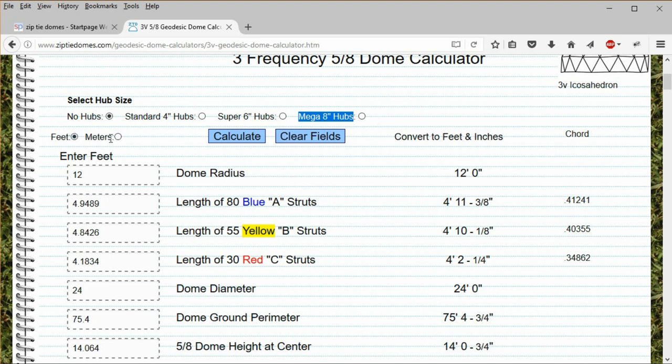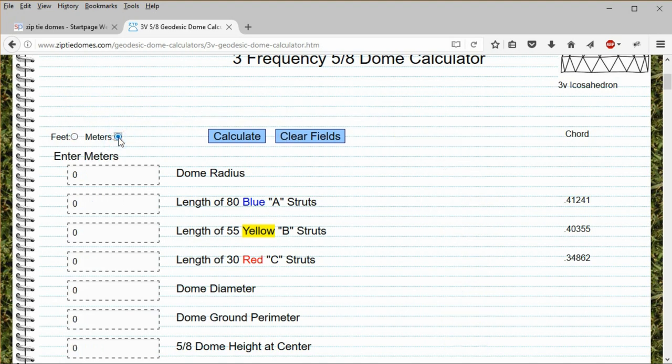If you are using a metric system, then change the radio button from feet to meters, and the imperial measurements are hidden and replaced with metric.